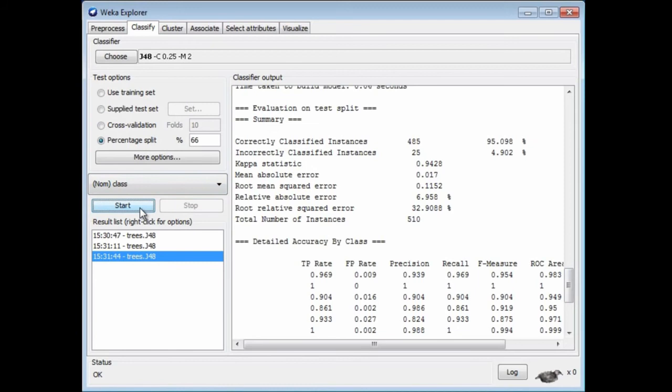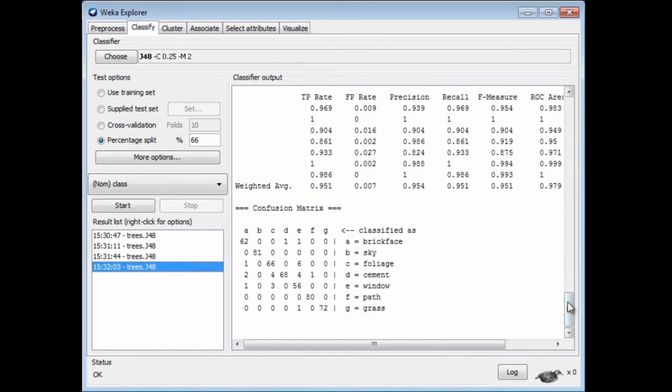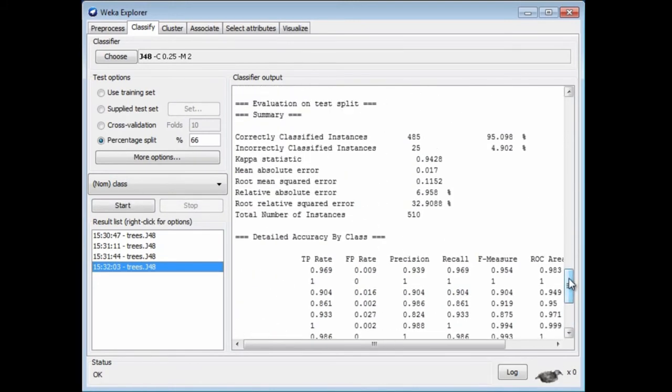If I were to run it again, if we had a different split, we'd expect a slightly different result. But actually, I get exactly the same result, 95.098% accuracy. That's because Weka, before it does a run, it reinitializes the random number generator. The reason is to make sure that you can get repeatable results. If it didn't do that, then the results that you got would not be repeatable.